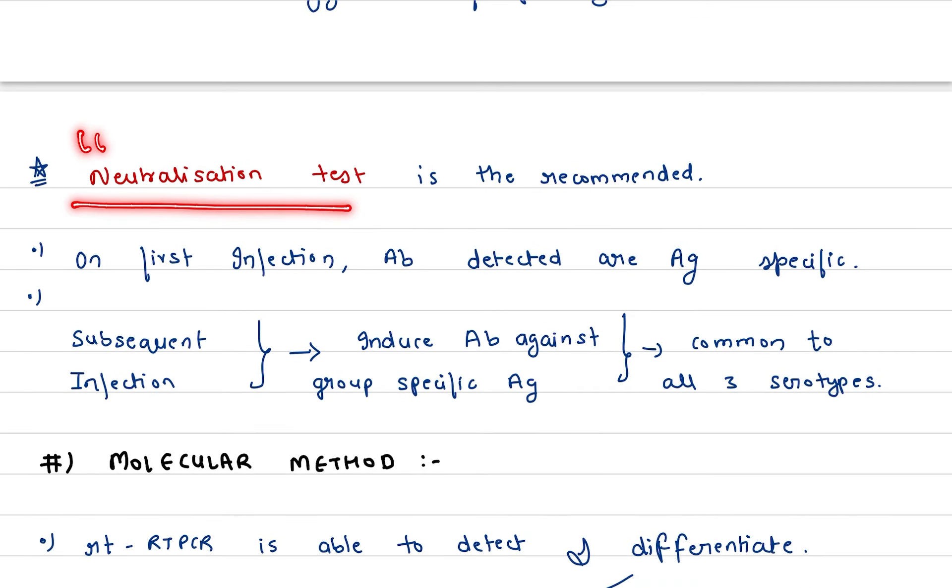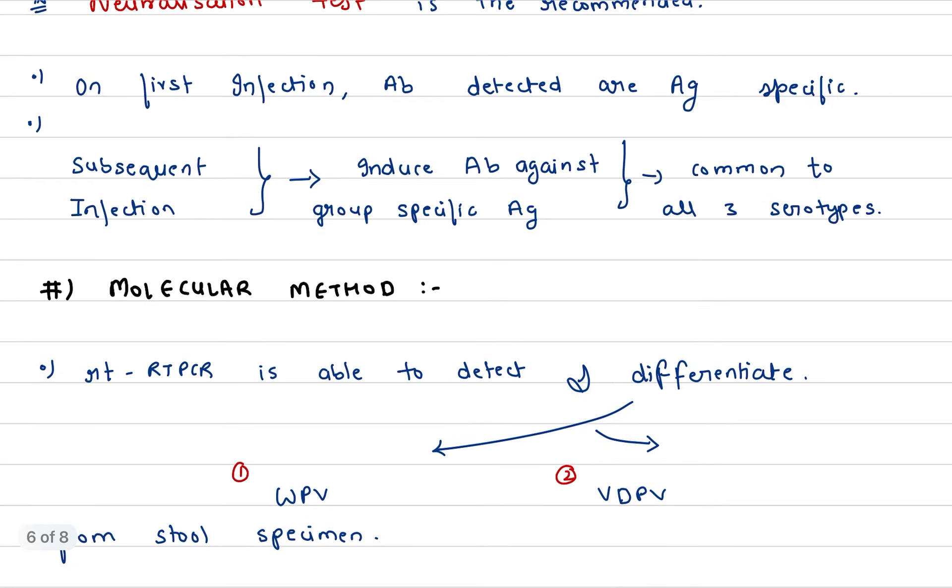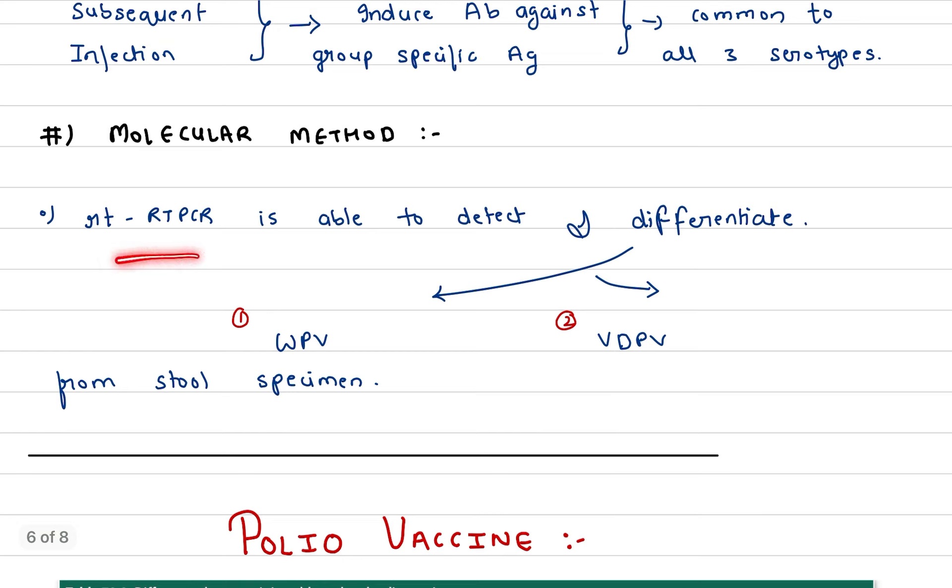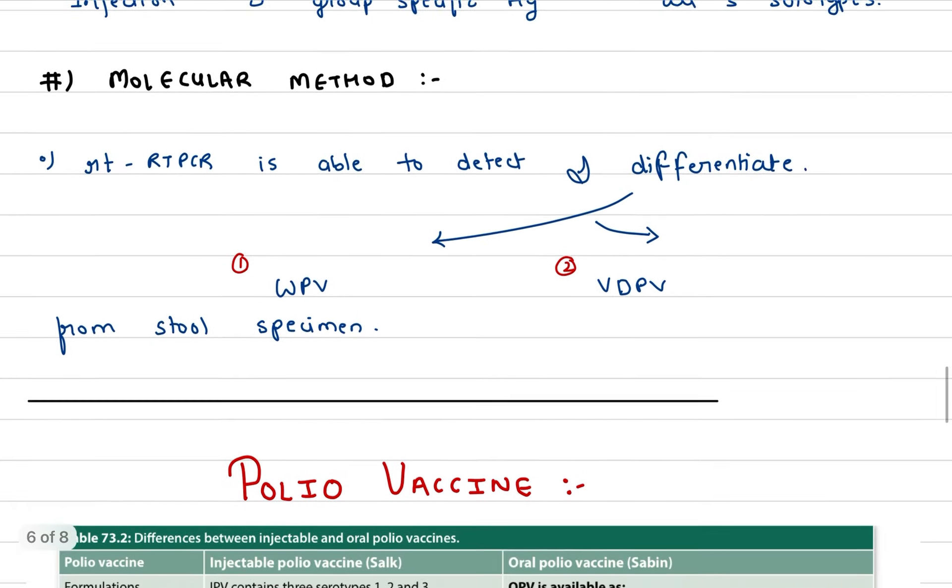Neutralization test is recommended. On first infection, antibody detects antigen-specific, but if there are subsequent infections, then induced antibodies against group-specific antigen will be common to all three serotypes, so this is not differentiating and specific. Molecular methods: when we talk about real-time RT-PCR, it is able to detect and differentiate WPV1 from WPV, from stool specimen, and vaccine-derived poliovirus.